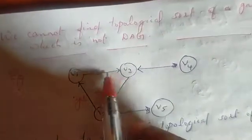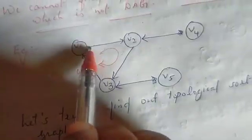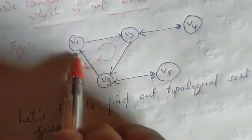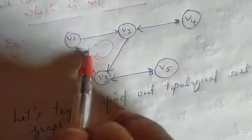This is a cycle graph, a directed graph in cycle form.